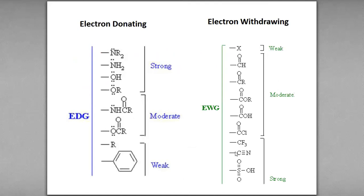Strong electron withdrawing groups include sulfonyl, nitrile, fluoride, acetyl chloride, carboxylic acid, acetate, ketones (RCO), aldehydes, and halogens like chlorine. Any of these groups can be used at the C2 position.